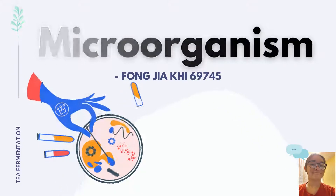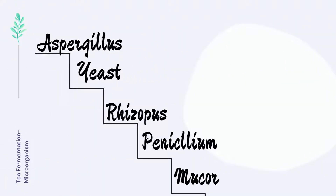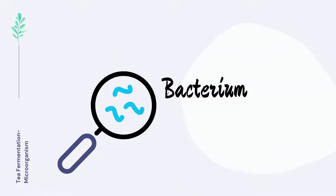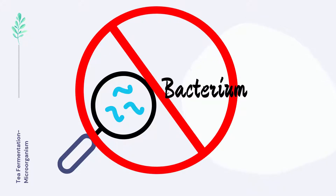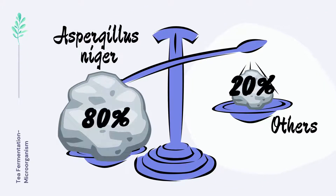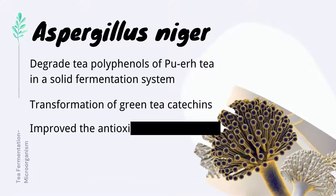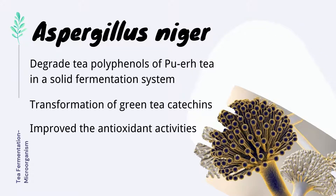The microbial flora isolated from the puerh fermentation process include Aspergillus, yeast, Rhizopus, Penicillium, and Bacca. Among these microorganisms, the dominant position of Aspergillus niger, yeast, and Rhizopus are generally observed under different environmental conditions or during processing. There is also bacteria present in tea fermentation, but the number is so small that no pathogenic bacteria are found. Aspergillus niger accounts for about 80% of the total number of microorganisms and is used to degrade tea polyphenols of puerh tea in a solid fermentation system. The enzyme extracted by Aspergillus niger is applied in the transformation of green tea catechins and improves their antioxidant activity.